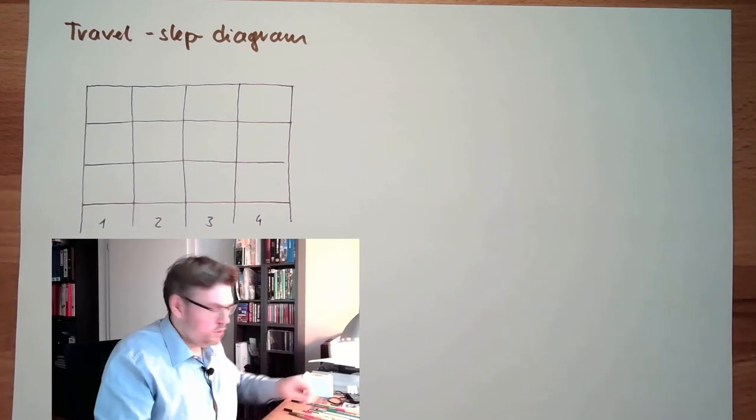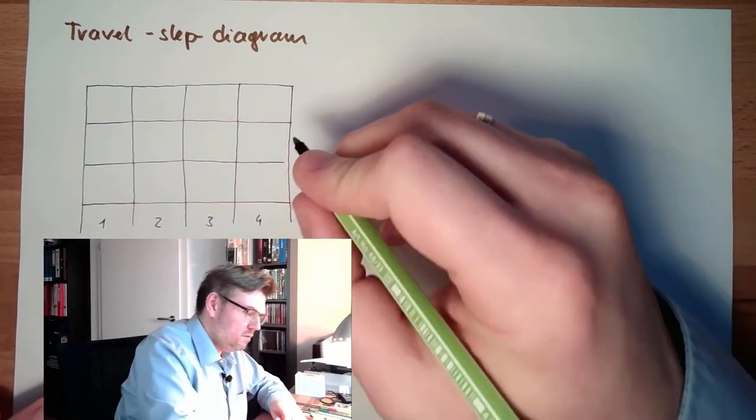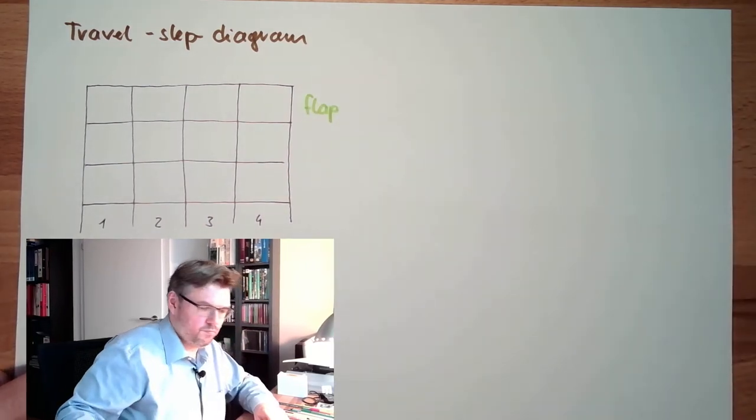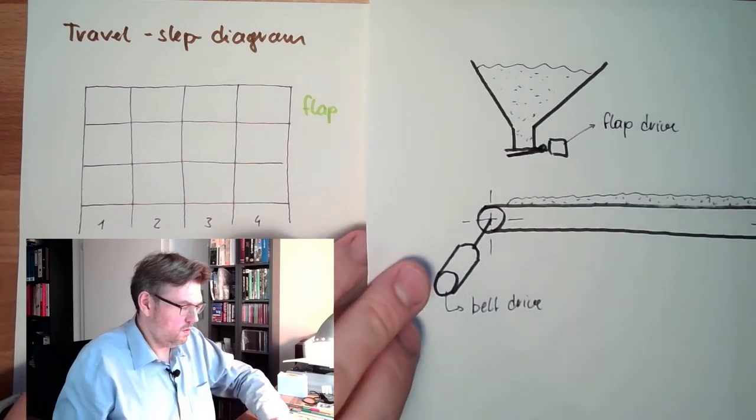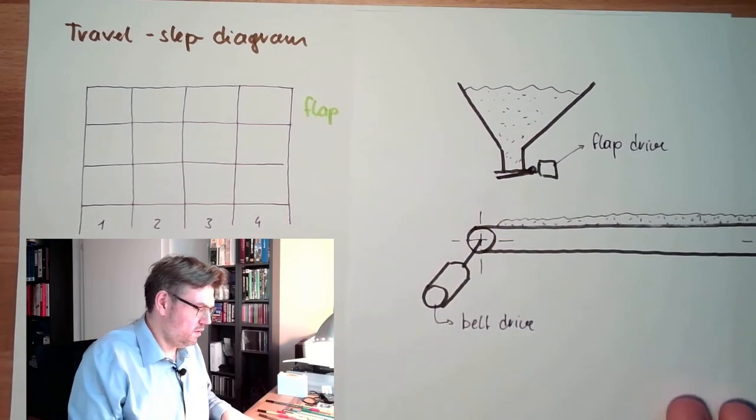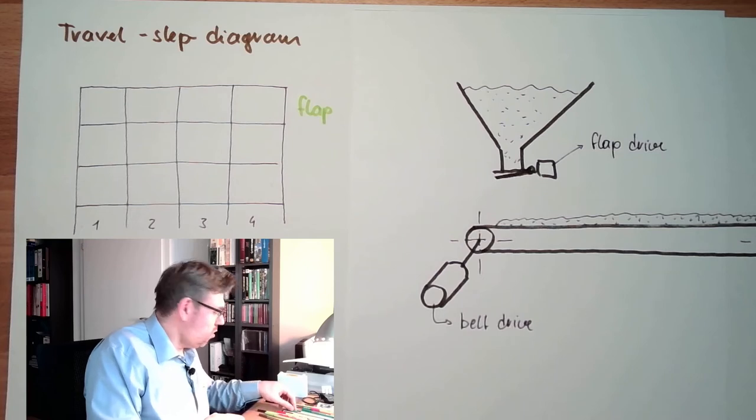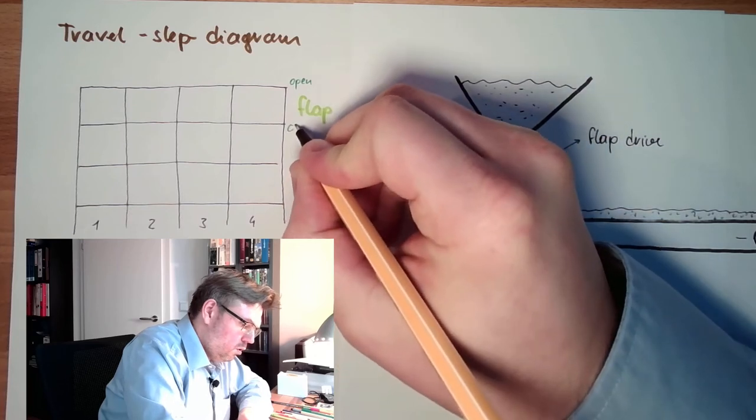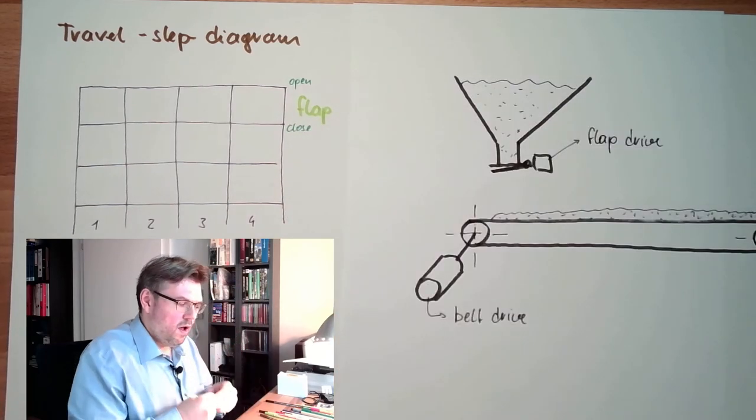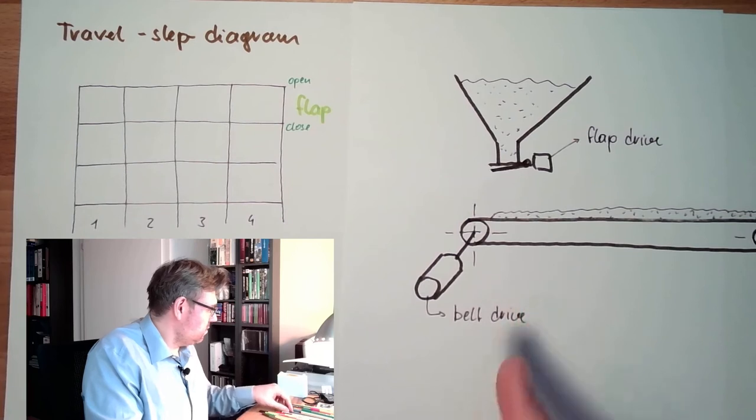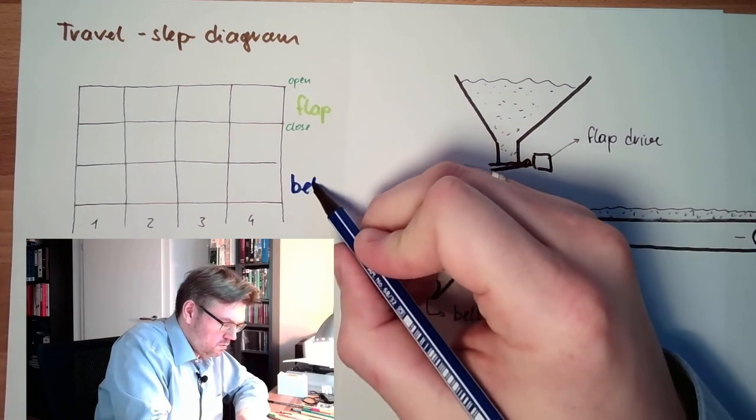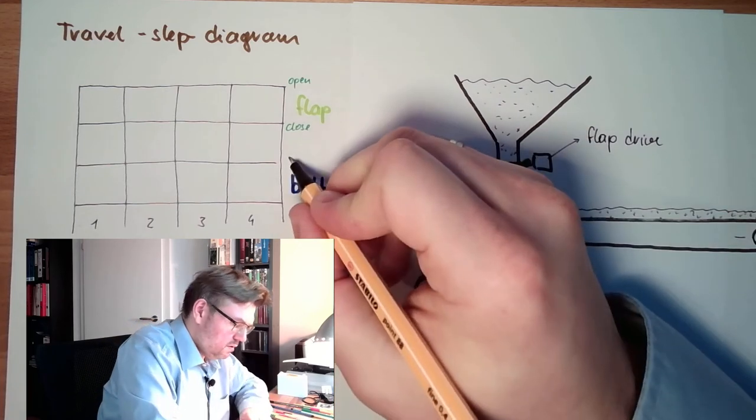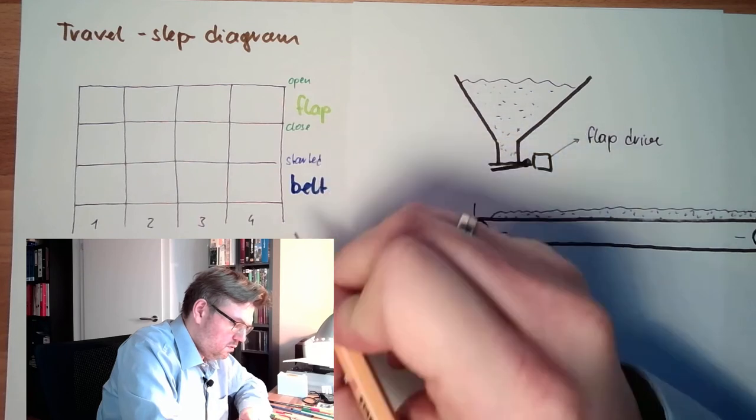Above here, this shall be the flap. This one, the flap, okay, it's either open or closed. And the other one is the belt. So this is the belt, it's either started or stopped.